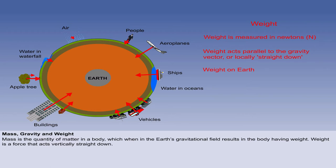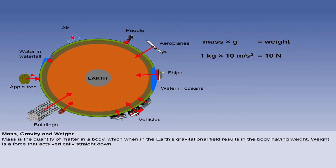Weight is the force that a mass exerts when it is in the gravitational field. Weight acts parallel to the gravity vector, and is locally taken to act straight down. The SI unit for weight is the Newton, designated by the symbol N. Weight can be calculated by multiplying the body's mass by the acceleration due to gravity, which is 10 metres per second squared. This means that a mass of 1 kilogram has a weight of 10 newtons on Earth. And a 60,000 kilogram aeroplane has a weight of over half a million newtons.